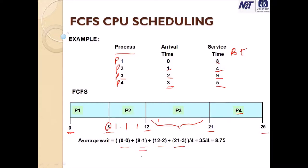The waiting times are 0, 7, 10, and 18. Summing these gives 35, divided by 4 processes. The average waiting time using First Come First Serve scheduling is 8.75 milliseconds.